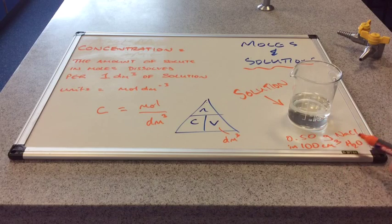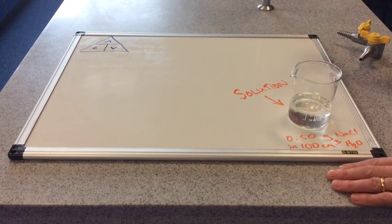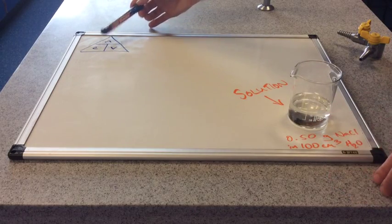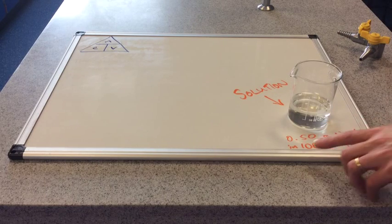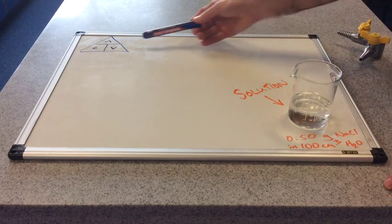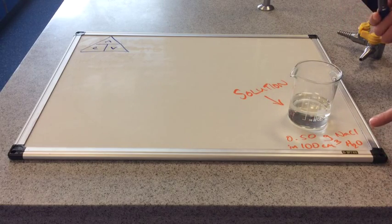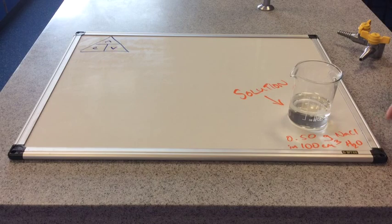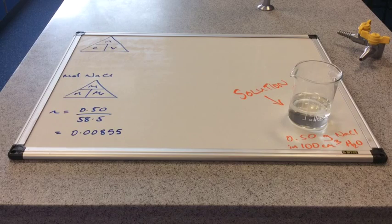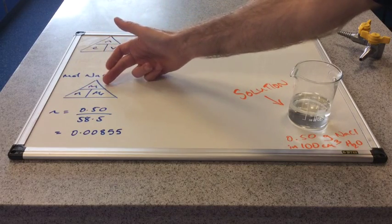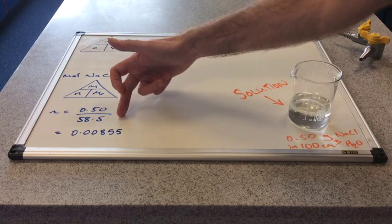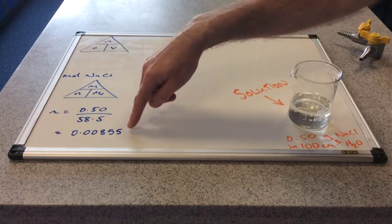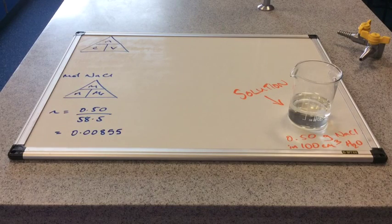We're going to work out the concentration of the sodium chloride solution made at the start of the video. We know the mass of sodium chloride and the volume of water it's dissolved in. We have the volume but we'll need to convert it to dm³. We don't have the number of moles yet — only the mass — so the first step is to use the mass triangle. Moles n equals mass over MR: the mass is 0.50 grams, the MR of sodium chloride is 58.5 g/mol, giving 0.00855 moles to three significant figures.